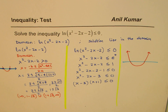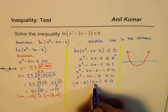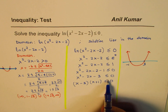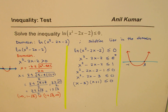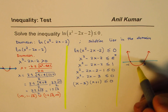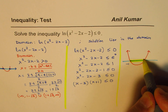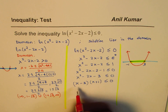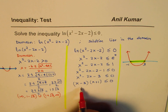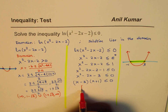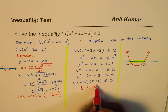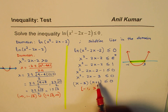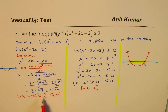So one zero is at minus one and the other is at three. The parabola opens upwards, so it looks like a U-shape. When we say less than or equal to zero, we are talking about the portion between the roots. Therefore the solution of the inequality is the interval from minus one to three, including both endpoints.